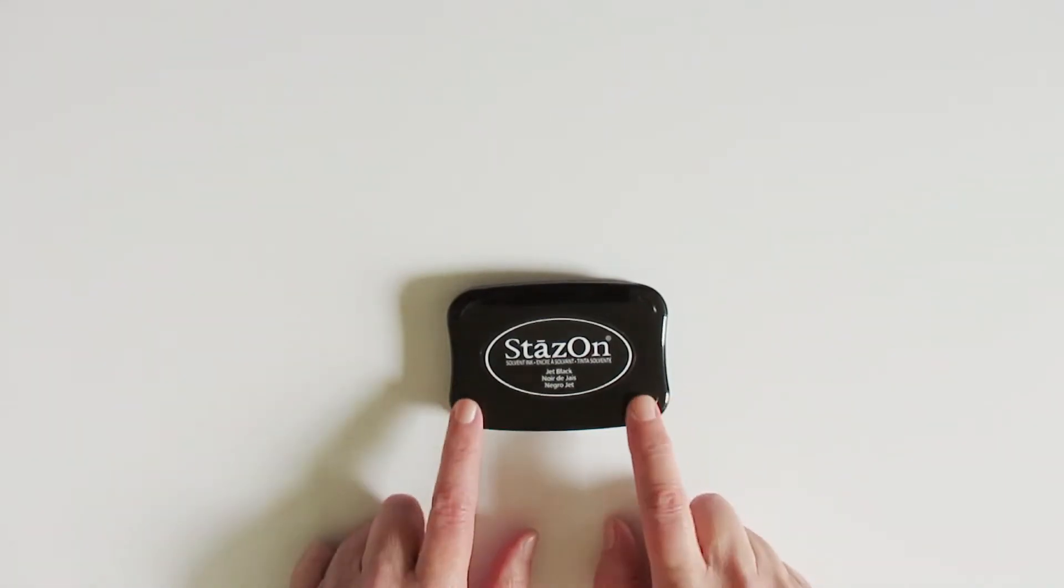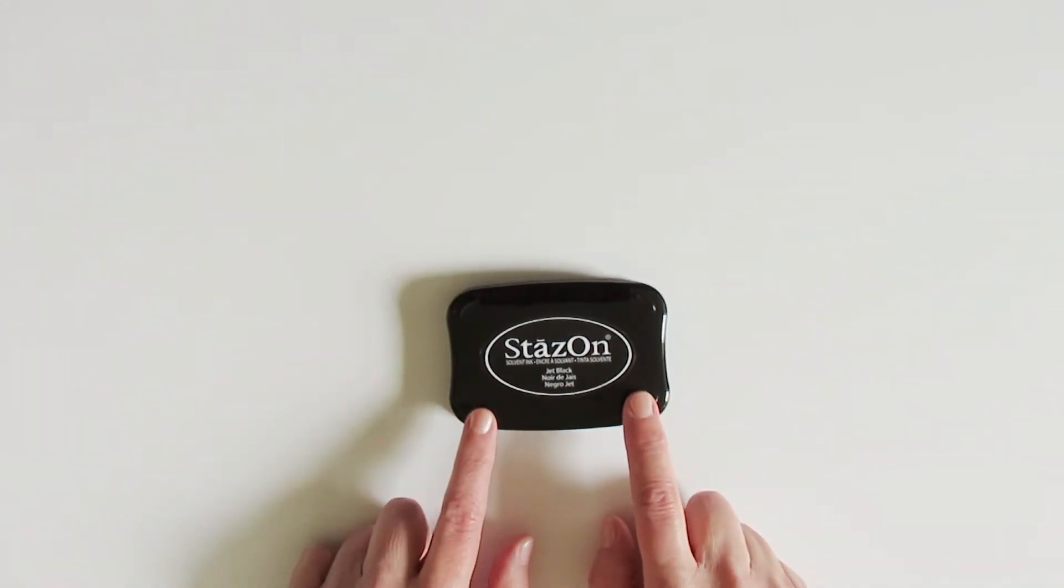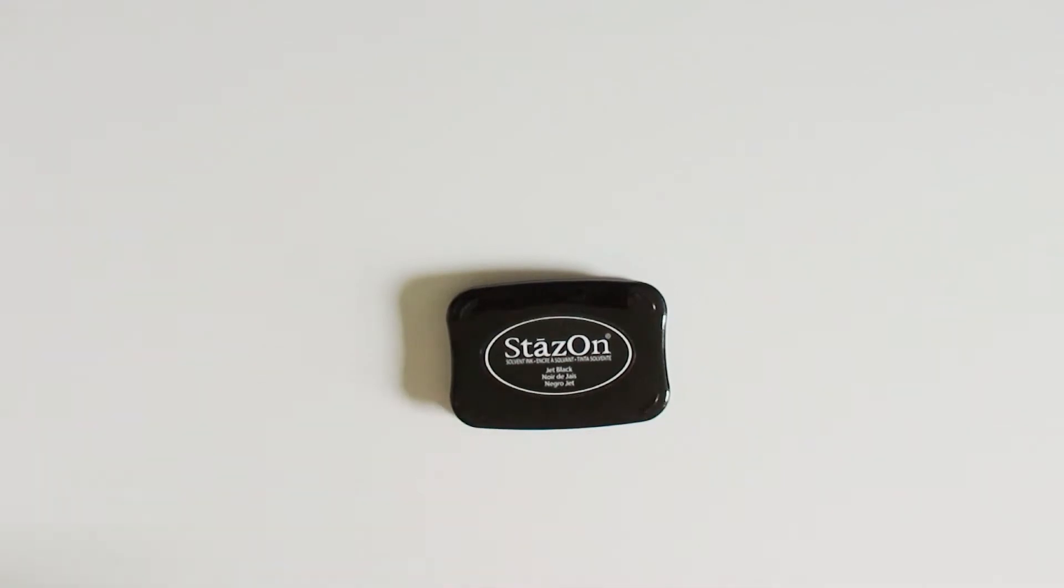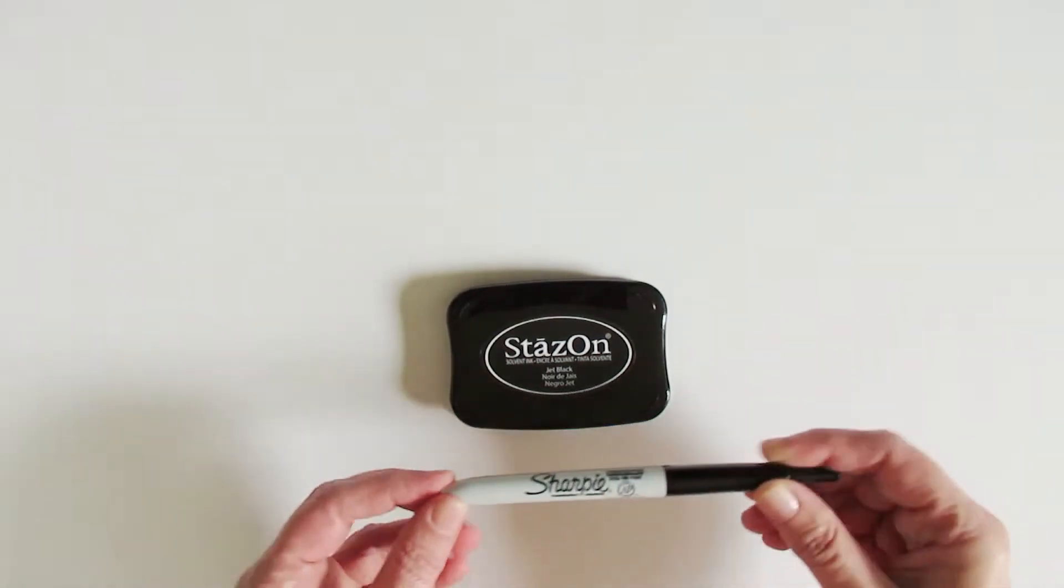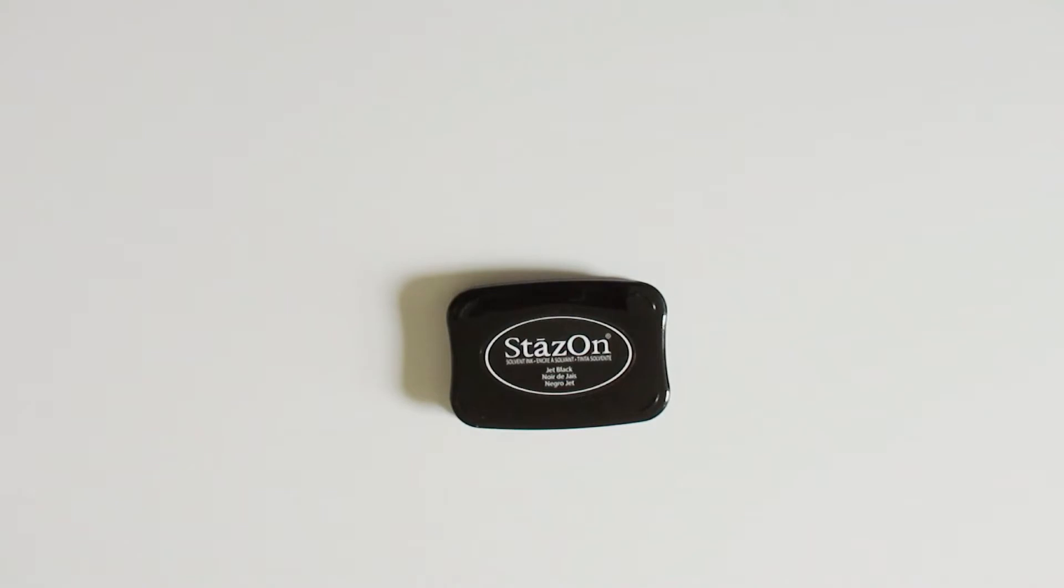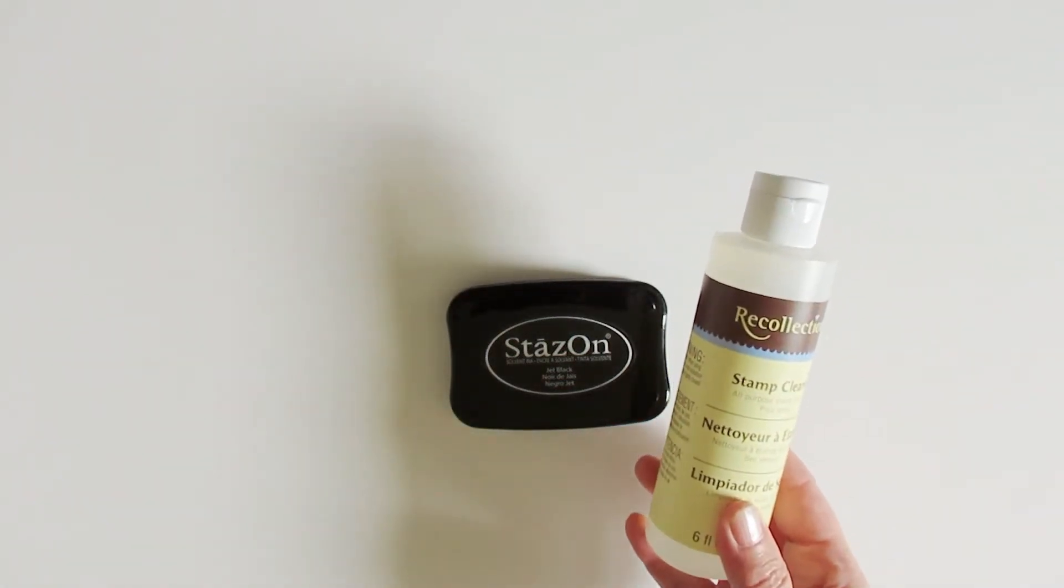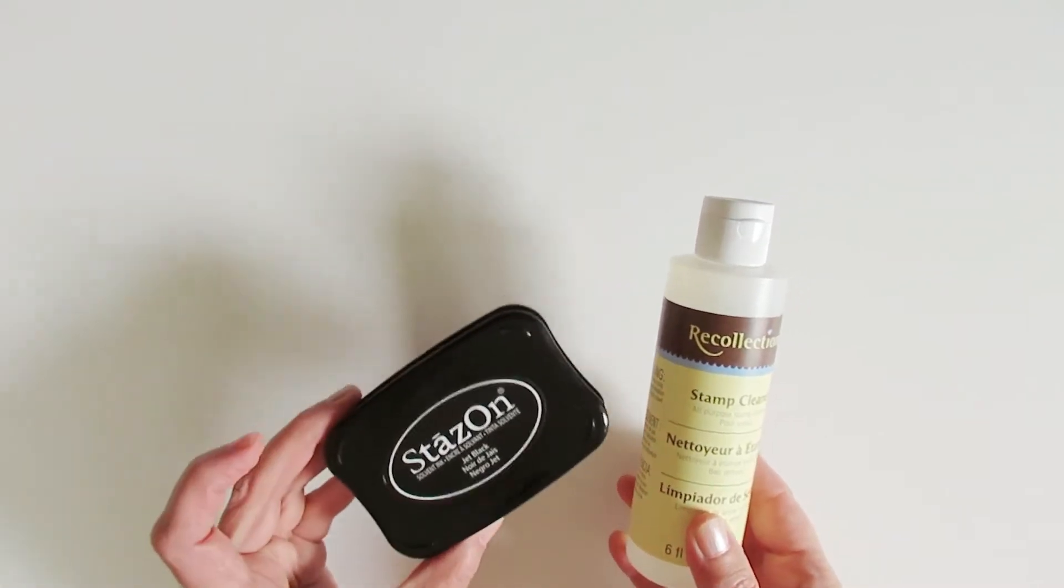So, because of this, I'm using black Stazon ink for this project. Stazon ink is a lot like Sharpie ink. It's permanent and smudge proof when it's dry, and it does dry without the use of a heat tool. Make sure to have your stamp cleaner on hand, because you always want to clean your stamps well after using Stazon ink.